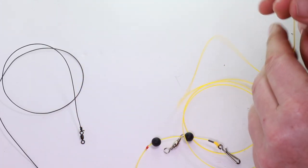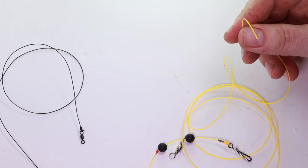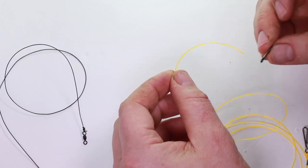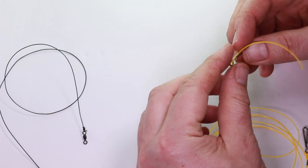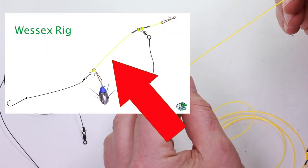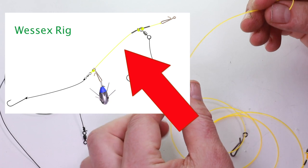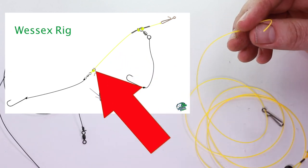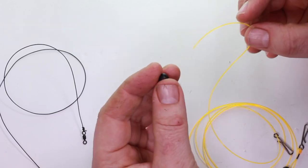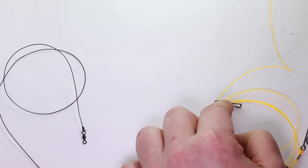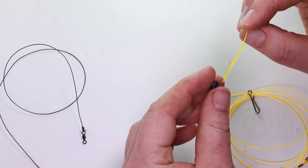And onto that we're going to thread on this lead clip, and that's going to be running along there in a minute. I'll show you that in a second. All the way down, you can put a bead either side of that running lead clip here.